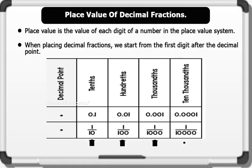The third place after the decimal is gotten by dividing the number by 1000 — it is called the thousandths place. The fourth place after the decimal is gotten by dividing by 10,000 — it is called the ten-thousandths place, and so on.